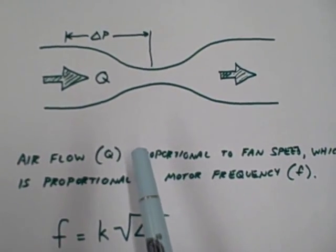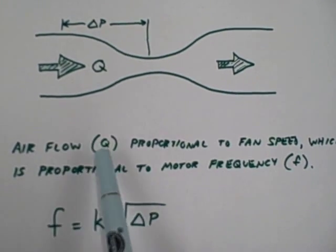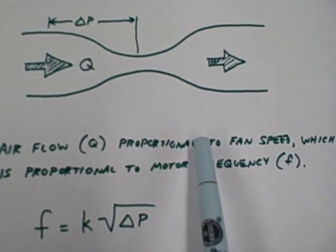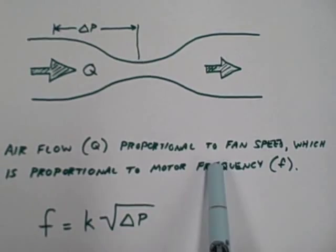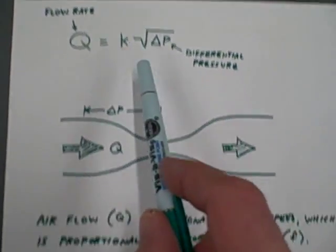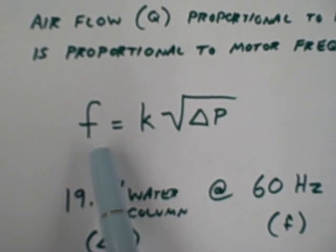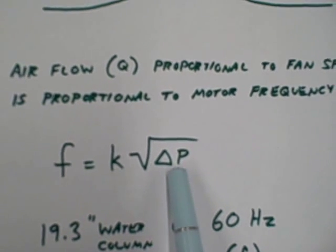In this case, we know the air is being driven by a variable speed fan, and the nature of the fan's operation is that air flow rate will be proportional to the speed the fan turns, which in this case is proportional to the frequency we're driving the motor at. So we can rewrite our proportionality as this: the frequency we're driving the motor is equal to some constant proportionality times the square root of differential pressure.